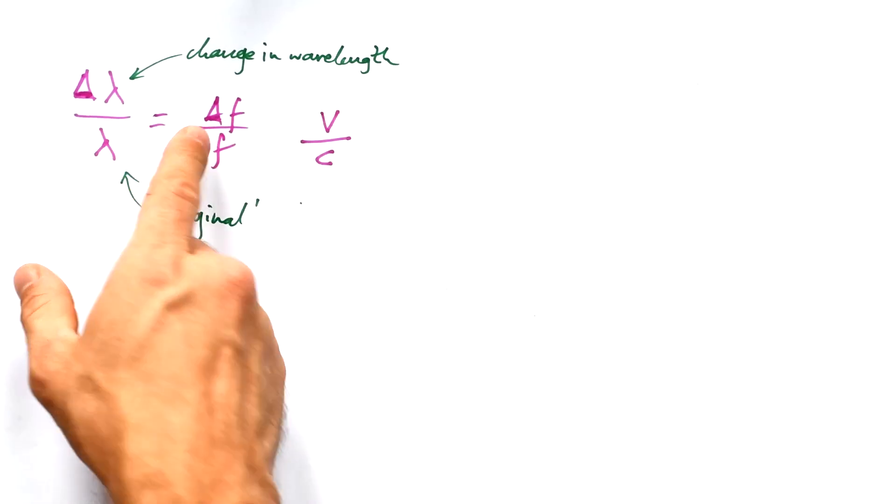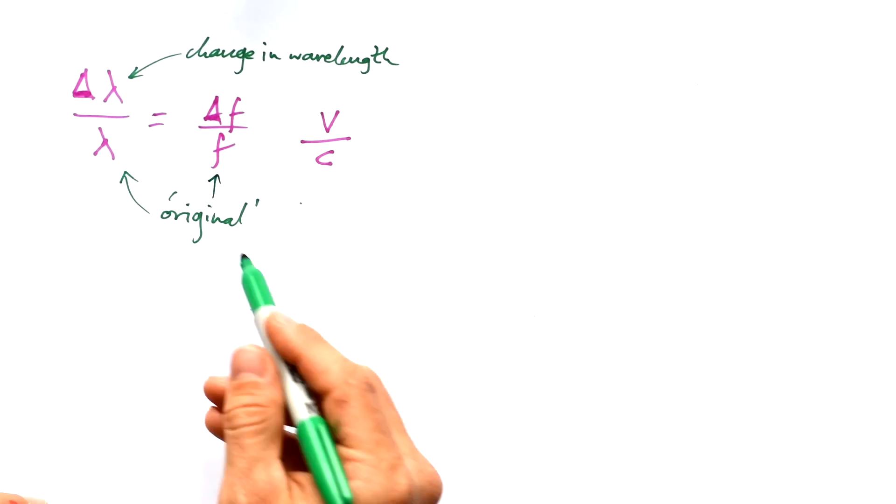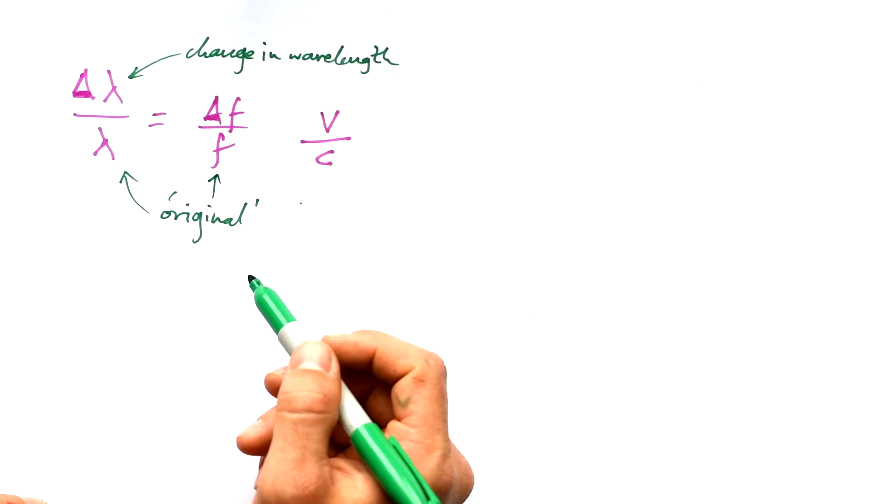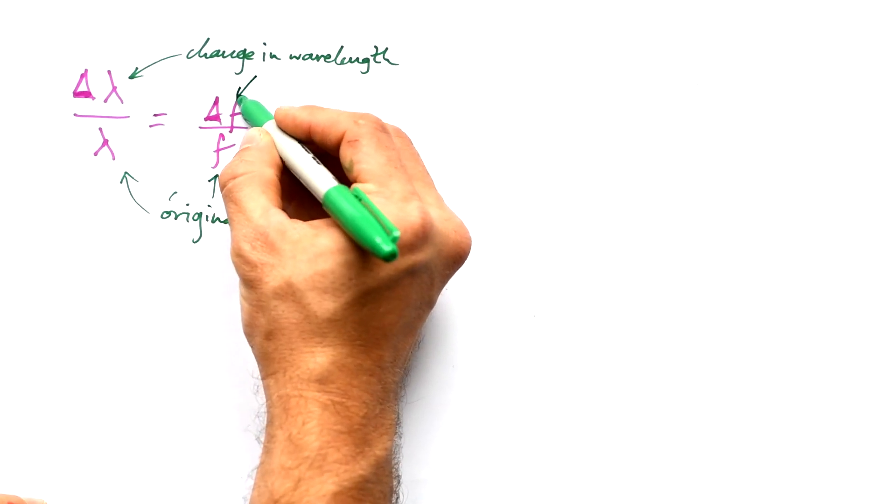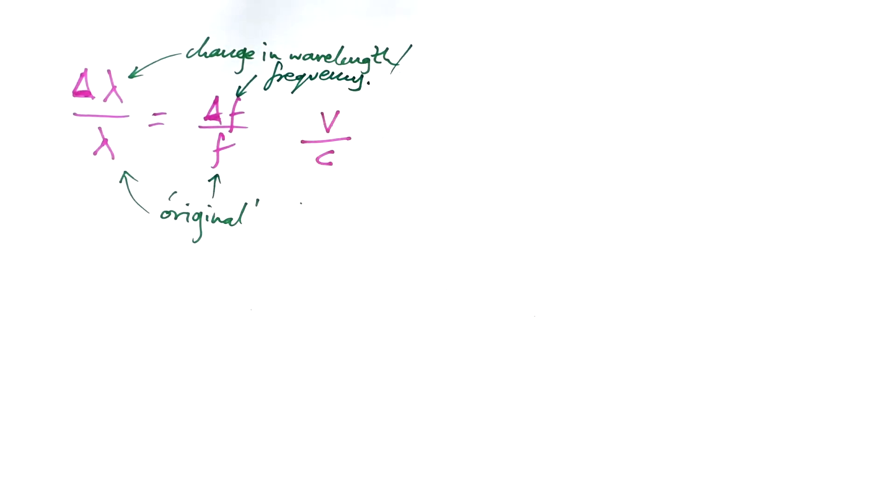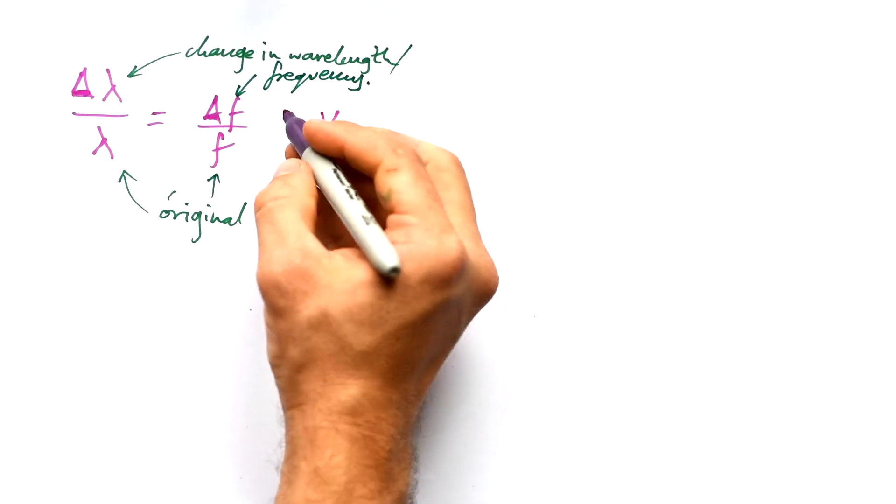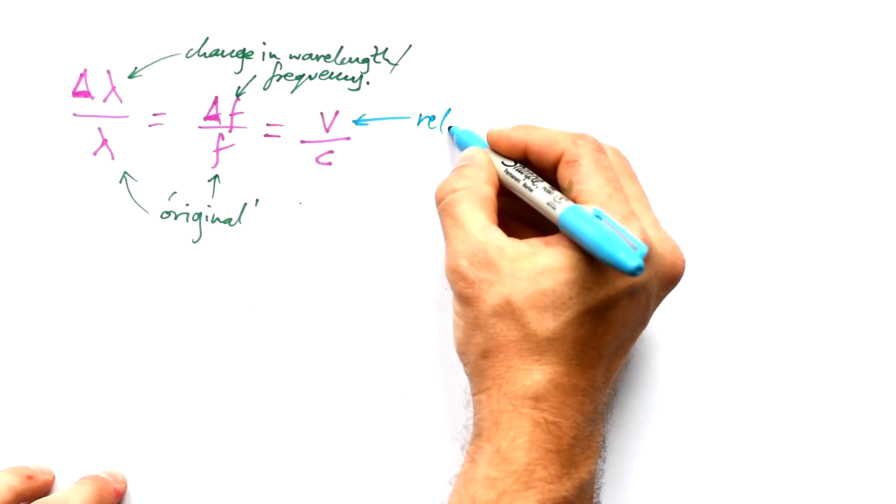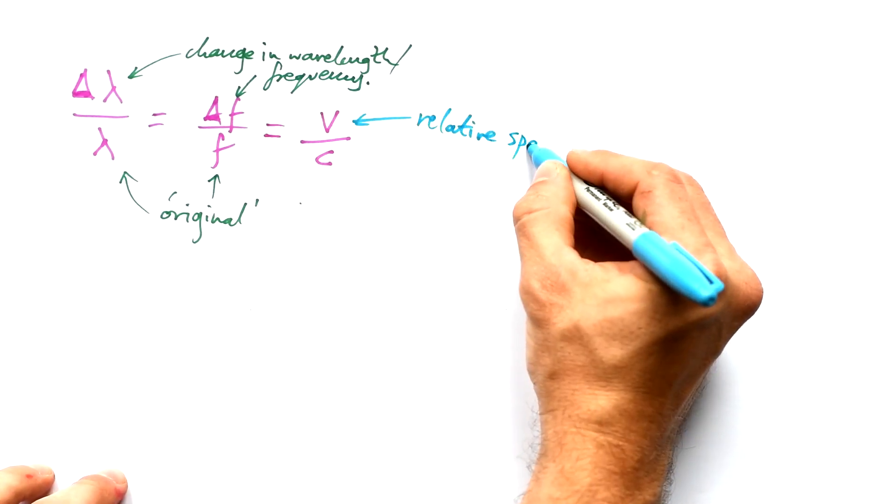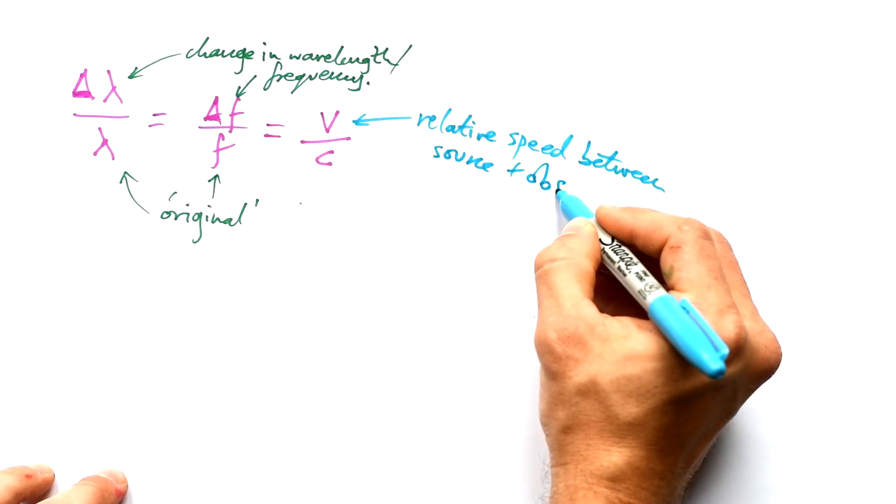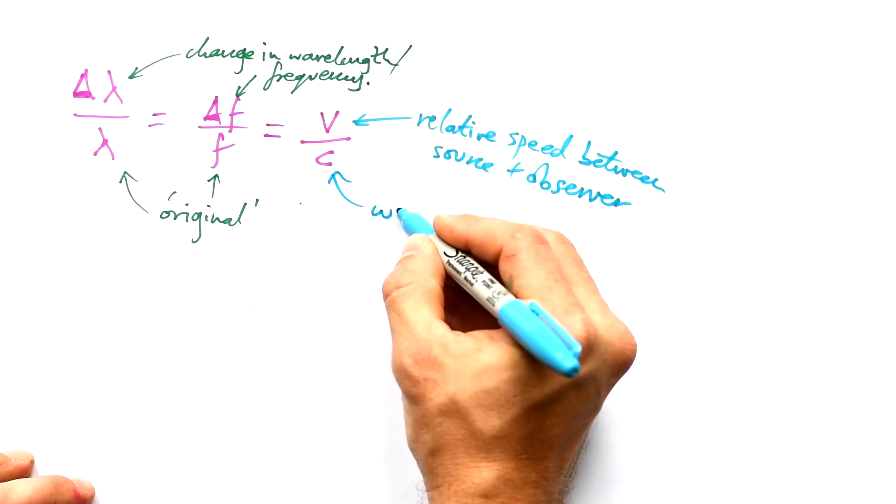So you should have come across delta before, it just means difference in or change in. So we have the normal or original wavelength or frequency on the bottom, and then we have the change in the wavelength or the frequency on top. And in both cases, the ratio of those two is equal to the ratio of the speed. And we said this is the relative speed or velocity between source of the wave and observer.